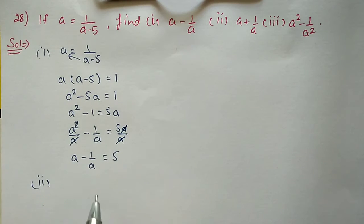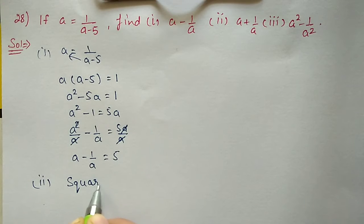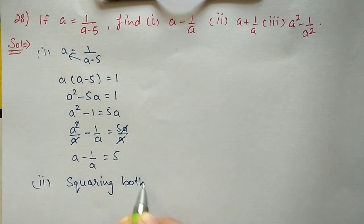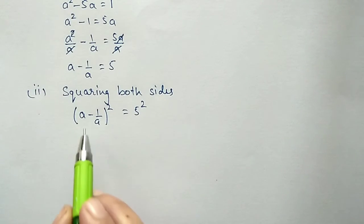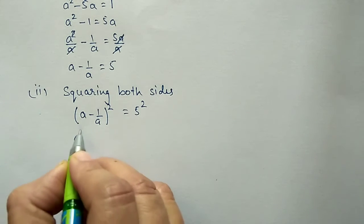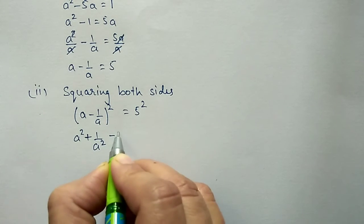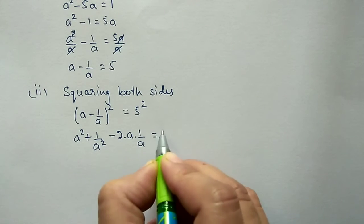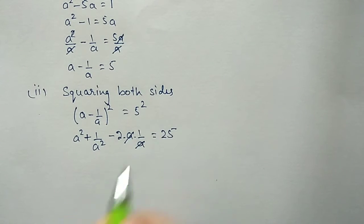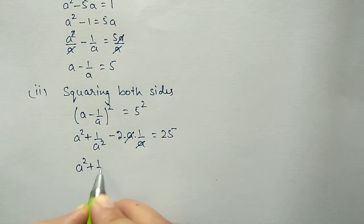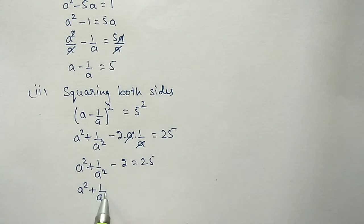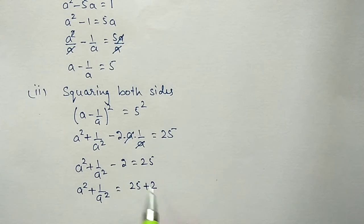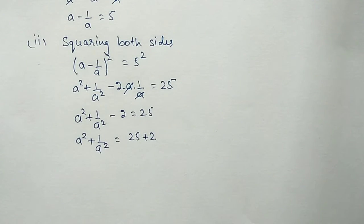For the second part, we square the equation (a − 1/a)² = 5². Using the (a − b)² formula on the left: a² + 1/a² − 2 × a × 1/a = 25. The a terms cancel, so a² + 1/a² − 2 = 25, giving a² + 1/a² = 27.